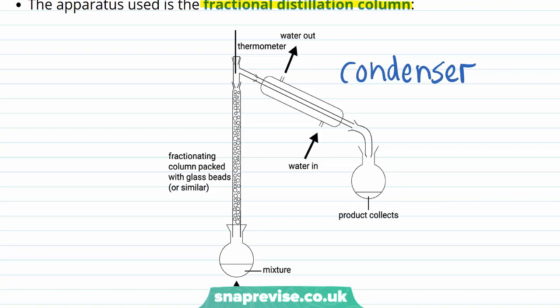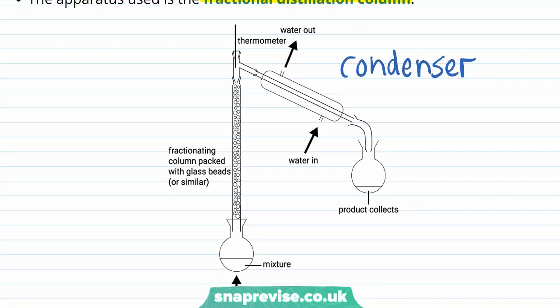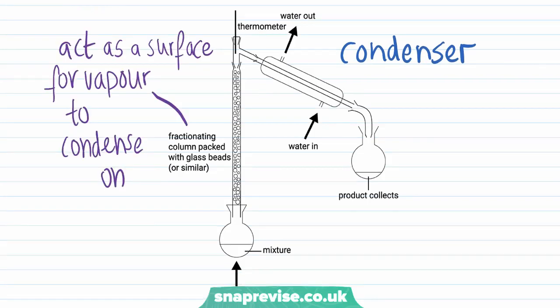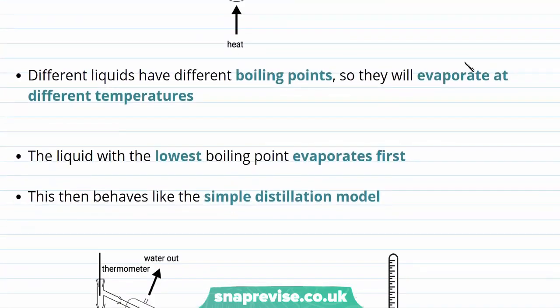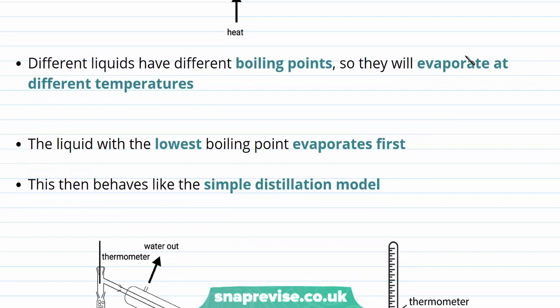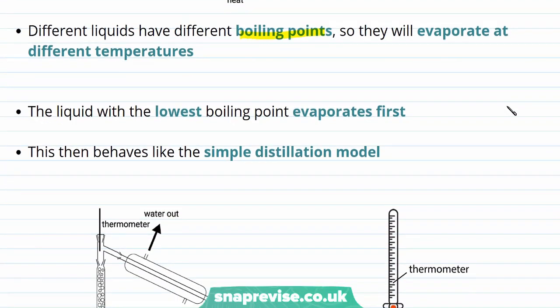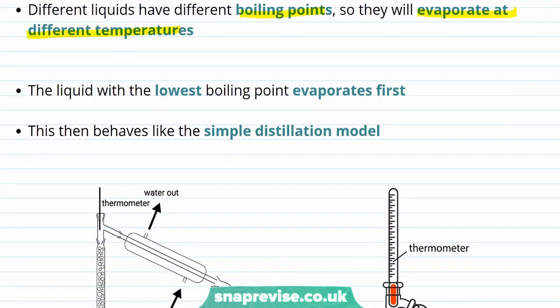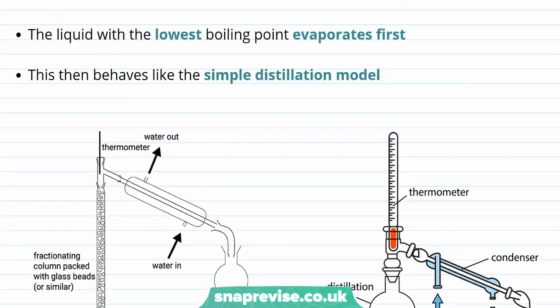The fractional distillation column is a very long and thin glass column which is filled with glass beads. These glass beads act as a surface for vapour, or gas, to condense on as it travels up the column. The fractional distillation method is based upon the fact that different liquids have different boiling points, so they will evaporate at different temperatures — remembering that evaporate just means to go from liquid to gas, or boil.